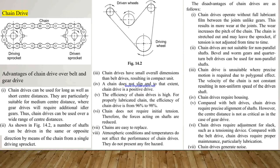Chain drives do not slip, and to that extent chain drive is a positive drive. The efficiency of chain drives is high. For a properly lubricated chain, the efficiency is from 96% to 98%. Chain does not require initial tension, therefore the forces acting on the shaft are reduced. Chains are easy to replace, and atmospheric conditions and temperature do not affect the performance of chain drives. They do not present any fire hazard.